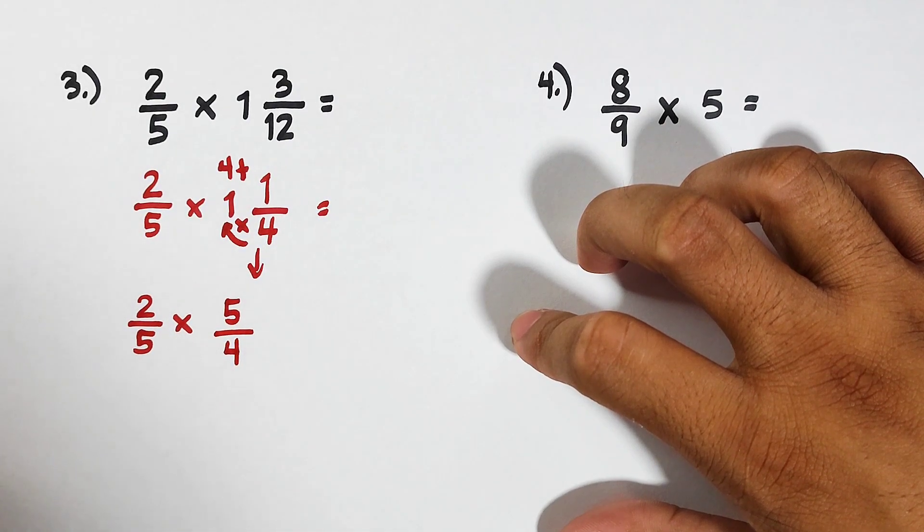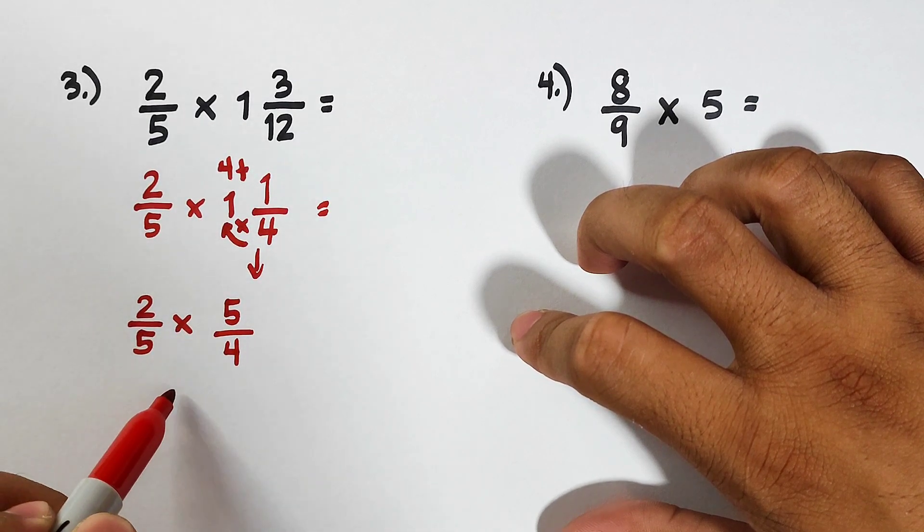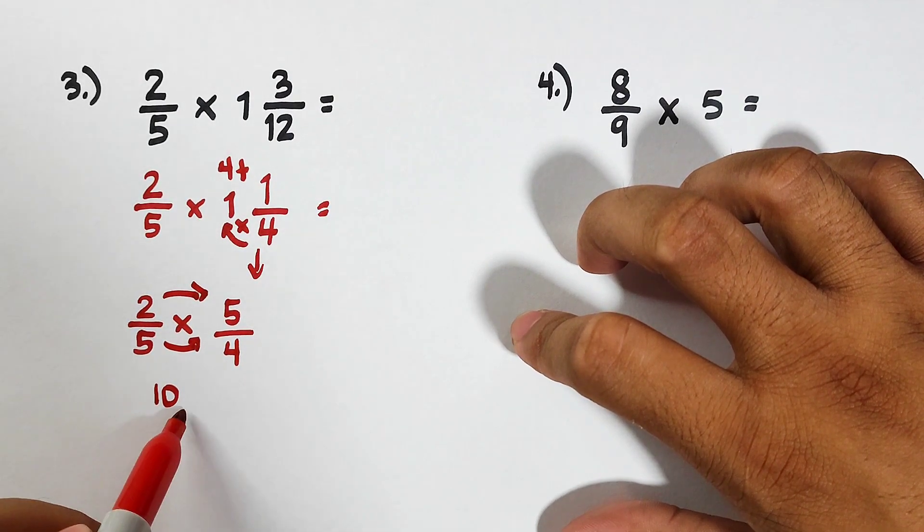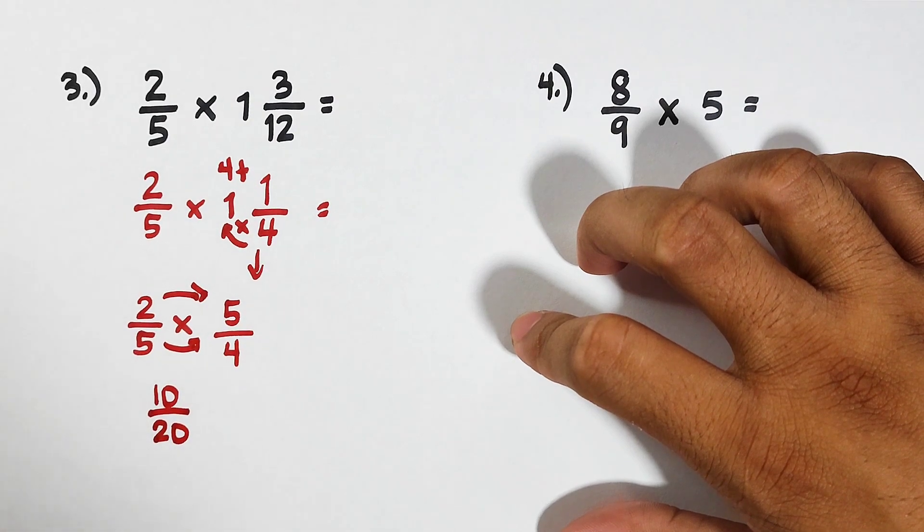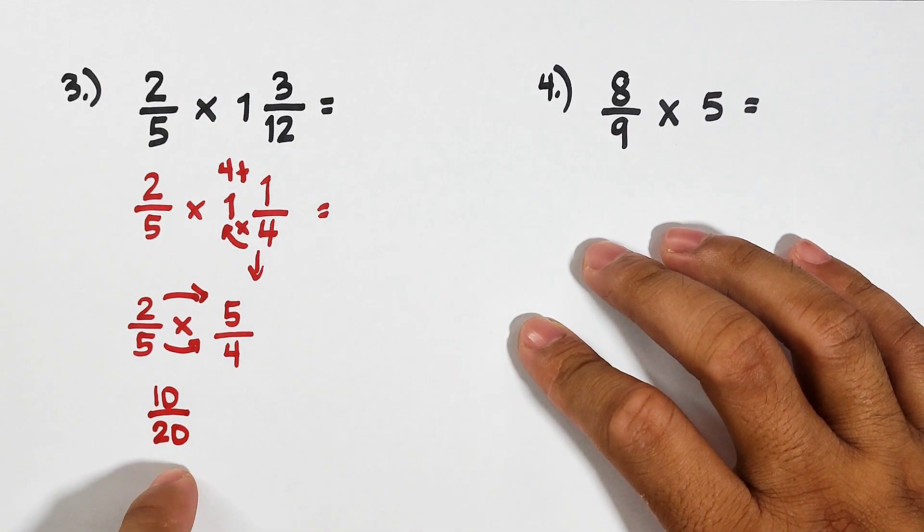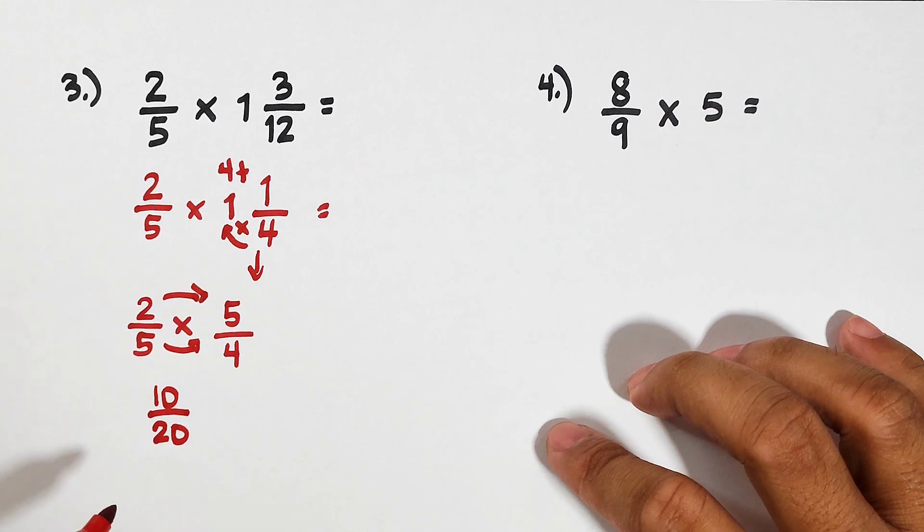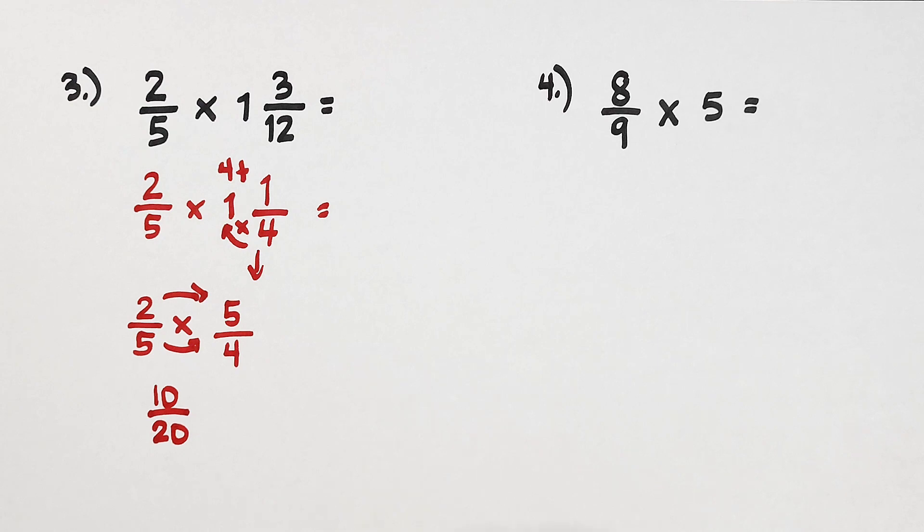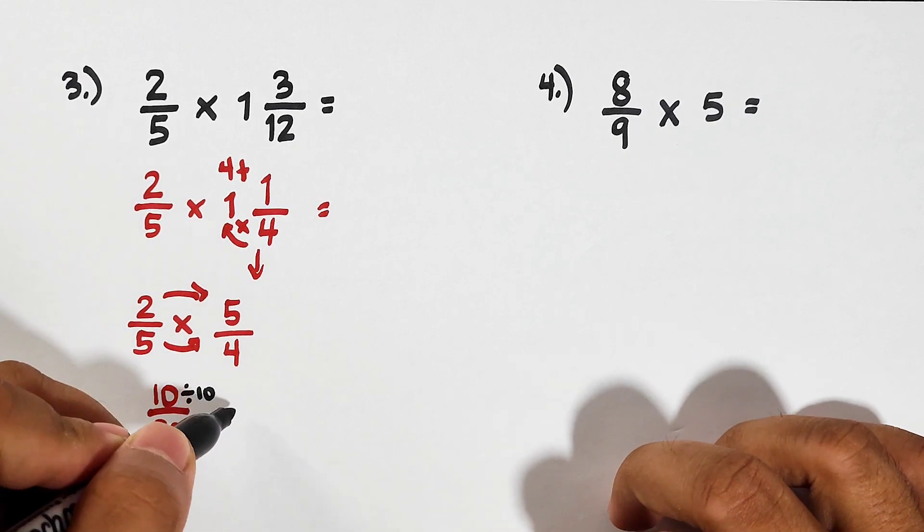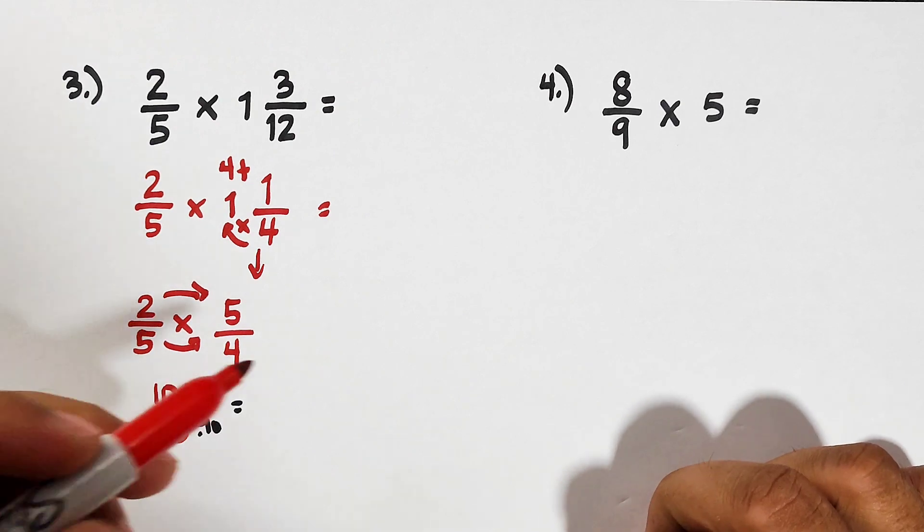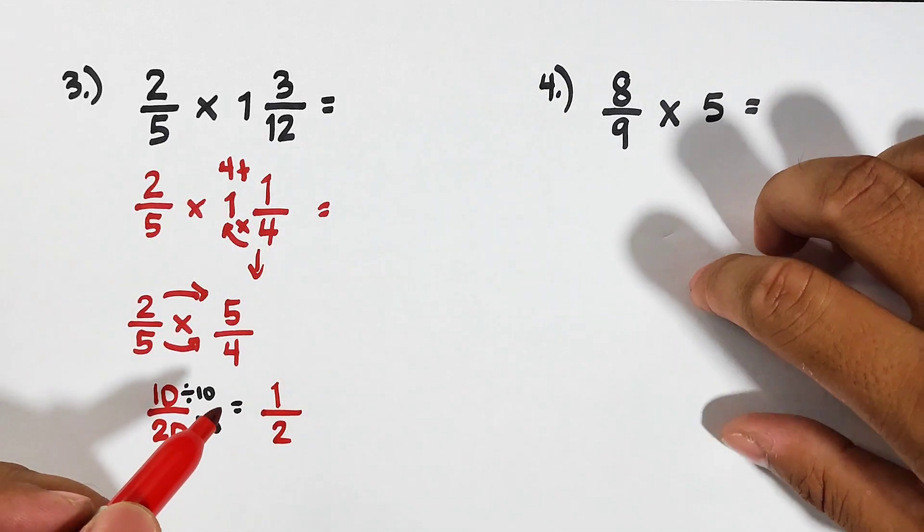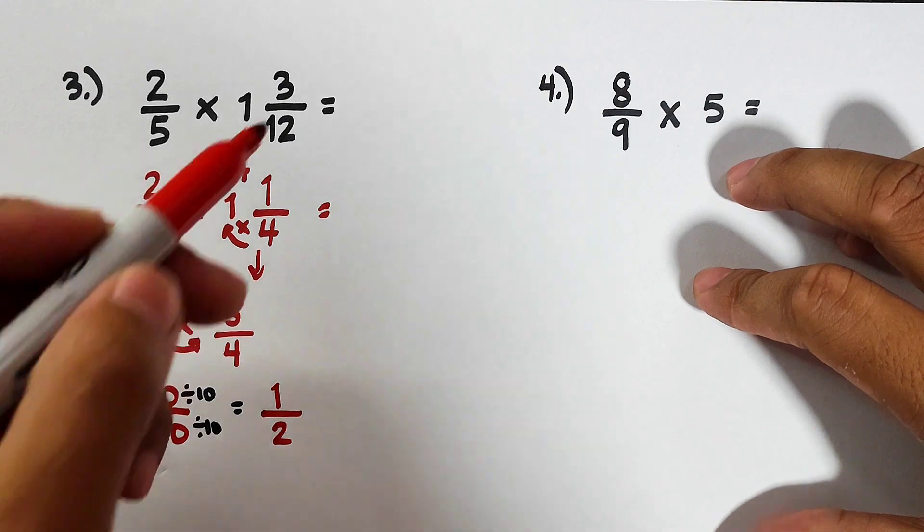Now let's multiply. 2 times 5 is equal to 10 over 5 times 4 is equal to 20. Now as you can see, the product 2/5 times 1 and 3/12, this is the product, but we can still simplify this one. The GCF is 10, meaning we can divide the entire fraction by 10 and by 10. 10 divided by 10 is 1, 20 divided by 10 is equal to 2. Meaning the product of 2/5 and 1 and 3/12 is simply 1/2.